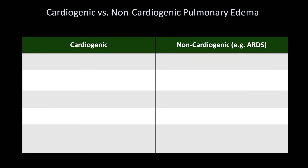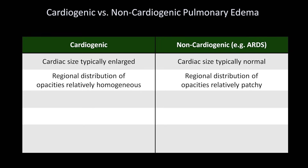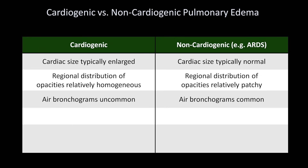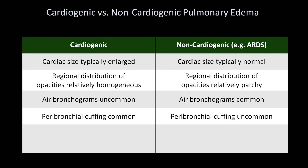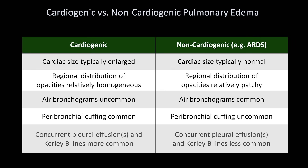So how do these radiographic features help distinguish cardiogenic from non-cardiogenic pulmonary edema? In cardiogenic edema, cardiac size is typically enlarged, while in non-cardiogenic edema it is typically normal. In cardiogenic edema, the regional distribution of opacities is relatively homogeneous, while it is relatively patchy in non-cardiogenic edema. Air bronchograms are common only in non-cardiogenic edema, while peribronchial cuffing is common only in cardiogenic edema. Concurrent pleural effusions and curly B lines are more common in cardiogenic. A bat's wing pattern is most consistent with cardiogenic edema, though it may be seen with some specific etiologies of non-cardiogenic edema.